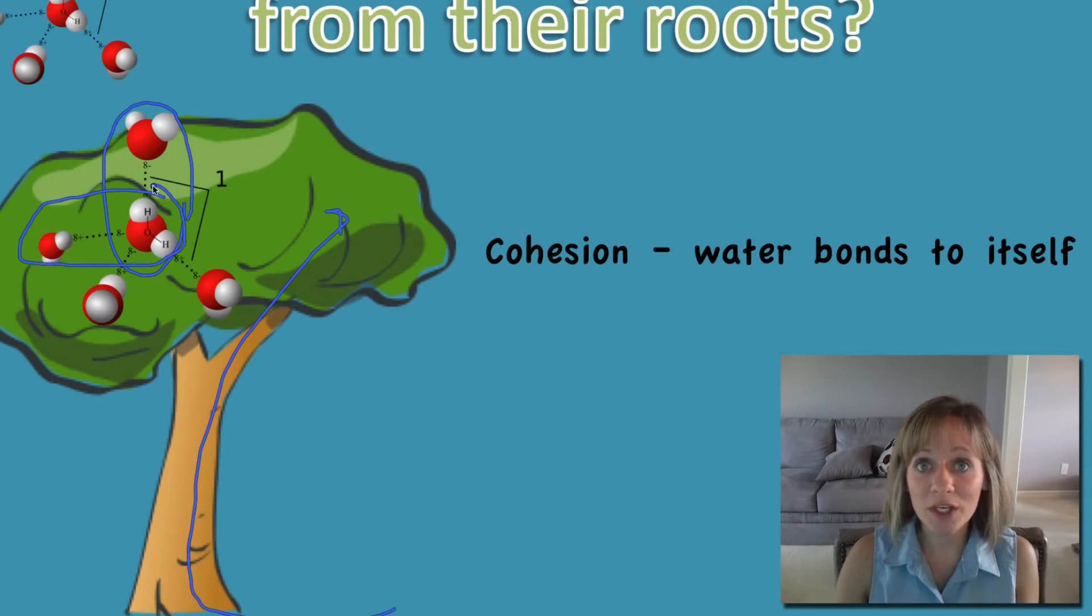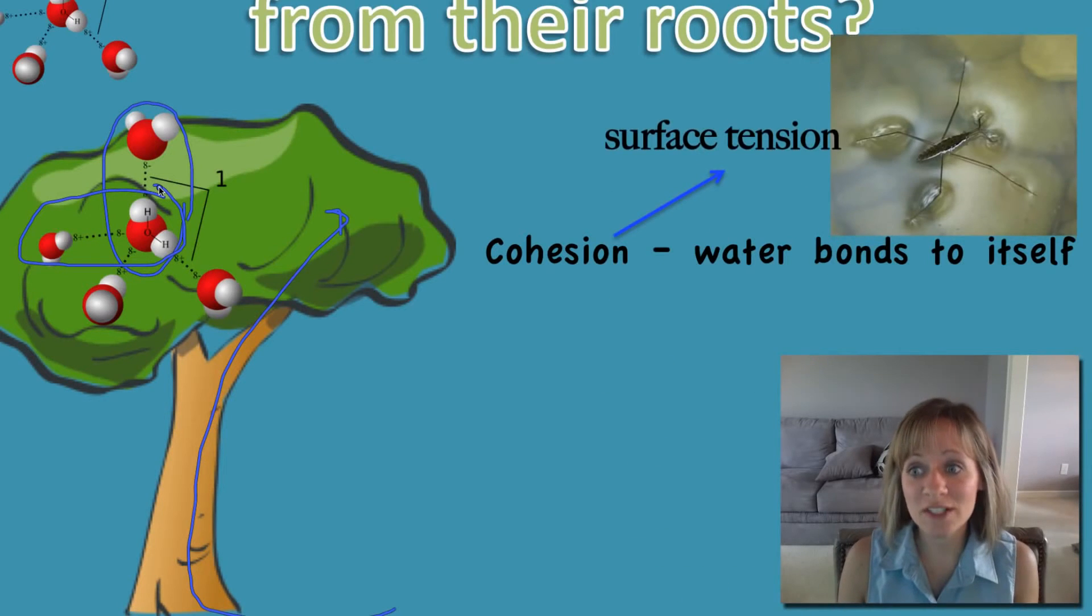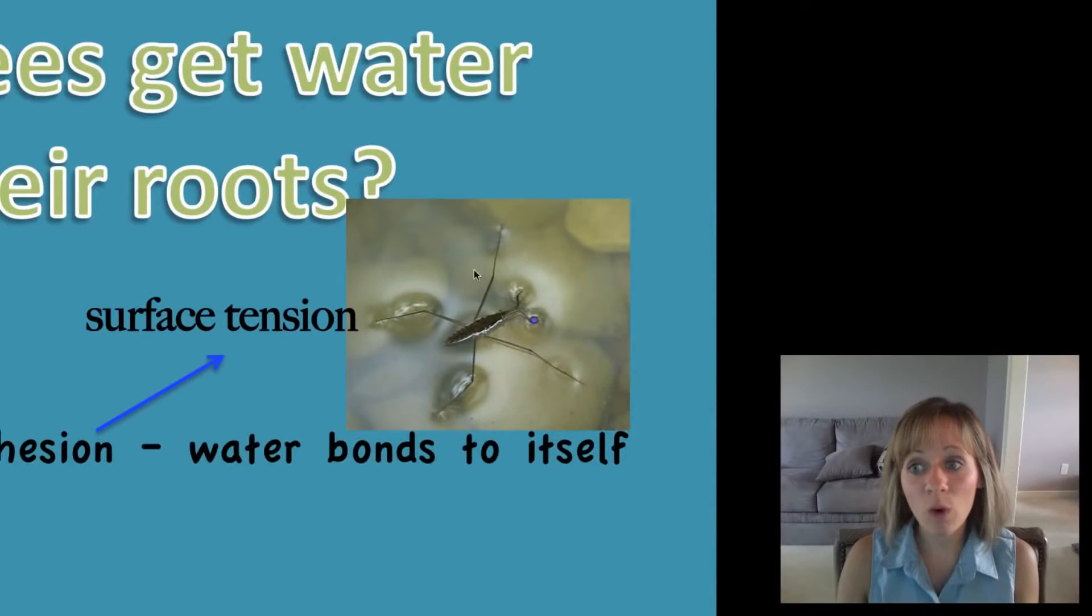Another example of cohesion you see a lot is surface tension. A water strider can walk on top of the water because of these tight hydrogen bonds between the water molecules creating a nice surface tension.